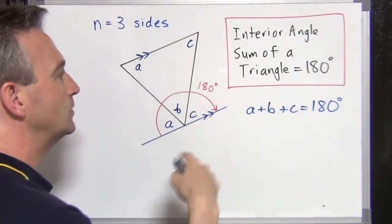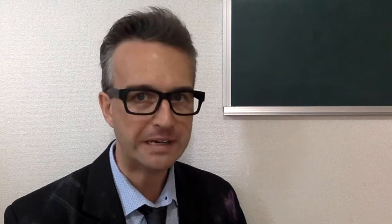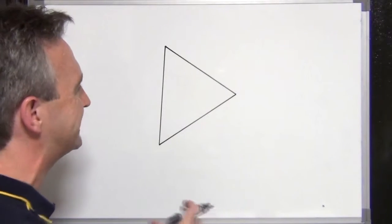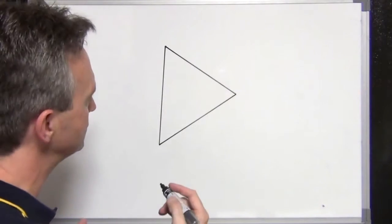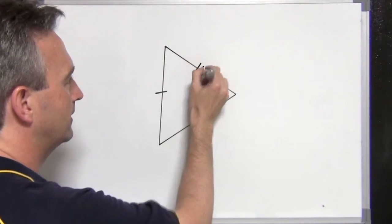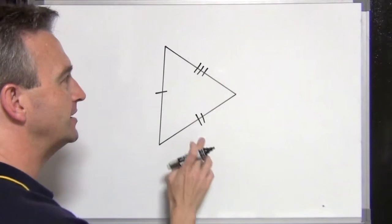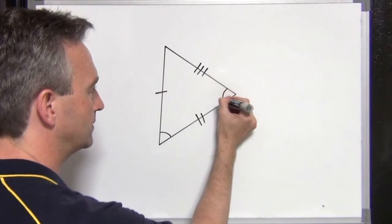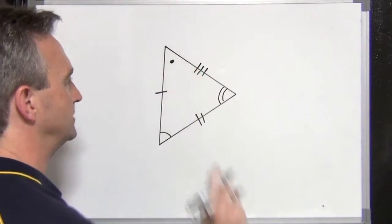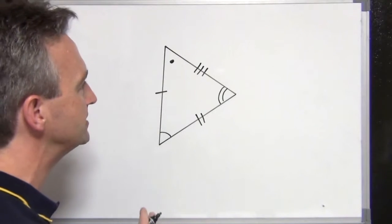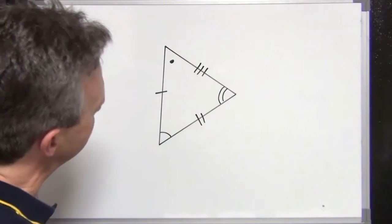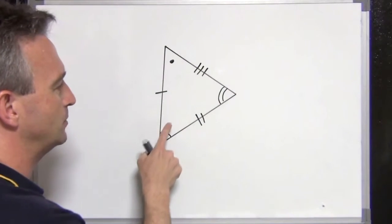There are many different ways of classifying and describing triangles. One type is called the scalene triangle. A scalene triangle has no two sides equal — all the side lengths are different. I'll show that with one stroke, two strokes, three strokes to indicate no two sides are equal. That also means that all three angles are not equal as well. With the scalene triangle, the largest side is always opposite the largest angle, and the smallest side is opposite the smallest angle.